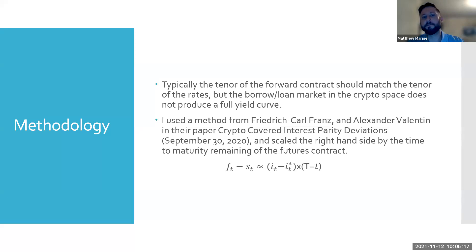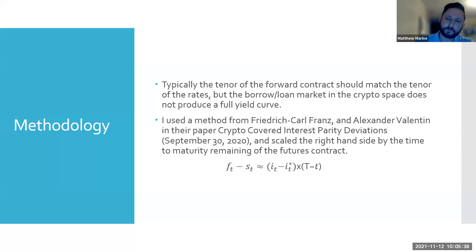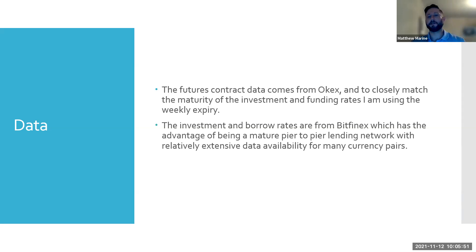Because there's no real yield curve in the lending market, I used a method from a paper by Carl Franz and Alexander Valentine, and I scaled the right-hand side differential to match the tenor of the futures contracts. I pulled futures contract data from OKEx using the weekly expiry, and I took investment and borrow rates from Bitfinex, which is a peer-to-peer lending platform.